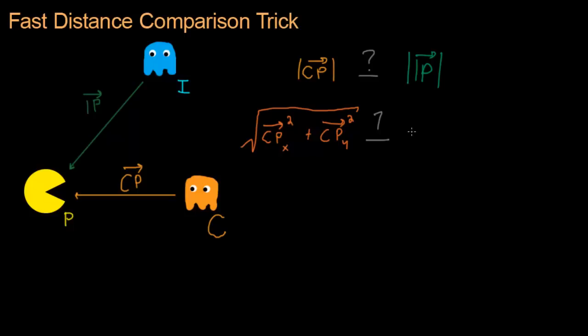And now we're going to break IP, the length IP, down into the formula that we have. So IP, the X component squared, plus the Y component of the vector IP squared. And then we're going to square root that whole thing.